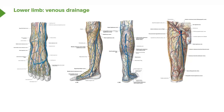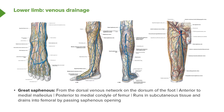Looking in more detail at the great and small saphenous veins, we have the dorsal venous network on the dorsal surface of the foot giving rise to the great saphenous vein. The great saphenous vein runs from this dorsal venous network up the medial aspect of the calf, going anterior to the medial malleolus, then posterior to the medial condyle of the femur. It then passes all the way up the medial aspect of the thigh and into the femoral vein through the saphenous opening.